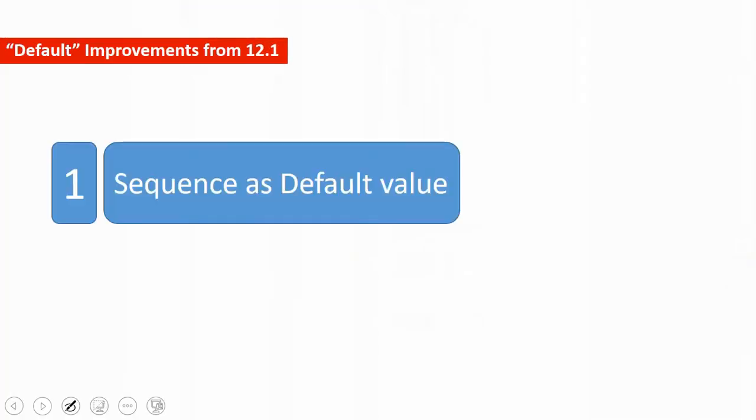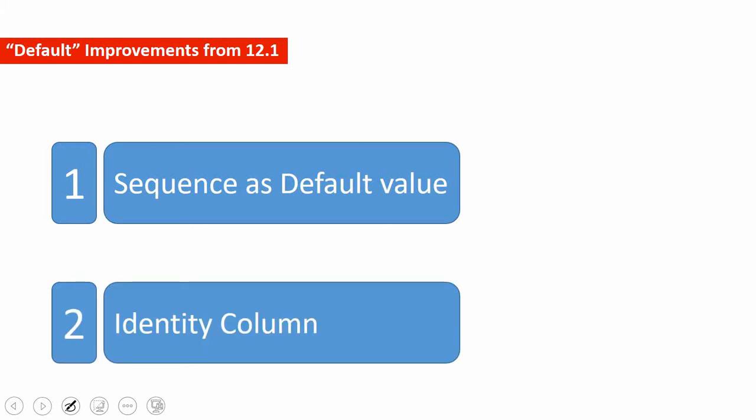From 12.1, Oracle introduced two new enhancements specific to the DEFAULT keyword. One is that we can use a sequence as a default value for a column. Another is to declare the column as an identity column. In this video I will talk about how to use the sequence as a default value. In the next video I will talk about identity columns. Let us understand how to use the sequence as a default value through a few examples.